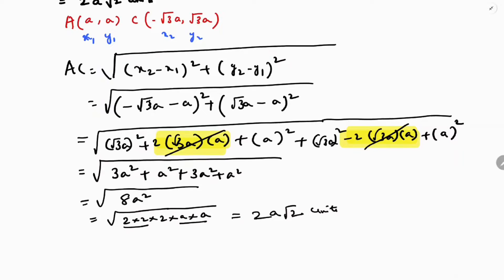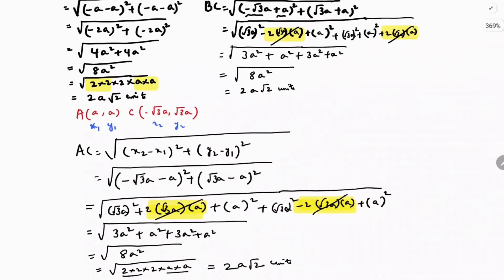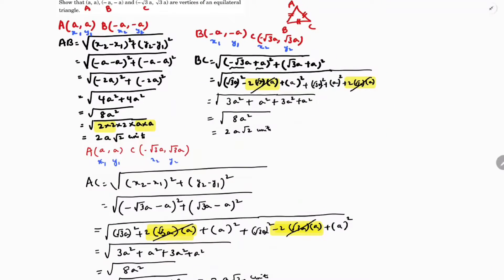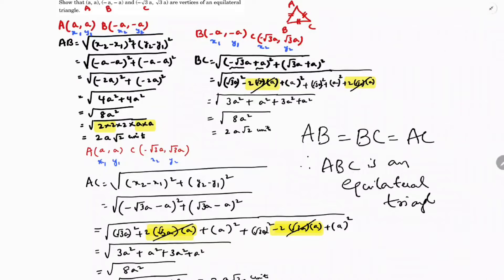We can conclude that AB, BC, and AC distances are all equal. We got AB = BC = AC = 2a√2 units. Therefore, triangle ABC is an equilateral triangle with side length 2a√2 units.